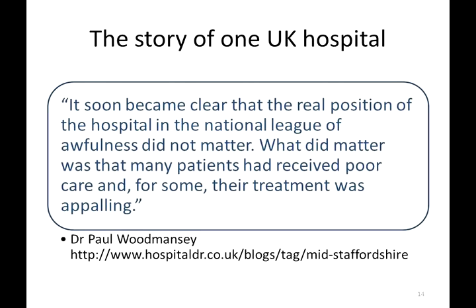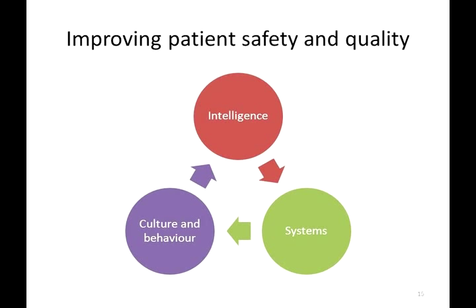I'd like to build on Hood's model and propose a new model for thinking about how we regulate patient safety and quality in healthcare. I suggest we start with gathering intelligence, then move on to looking at systems, then to culture and behaviour — understanding that all three components are in constant dynamic interaction. You can't have quality and safety unless you have all three functioning optimally.